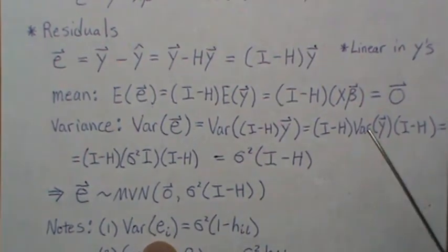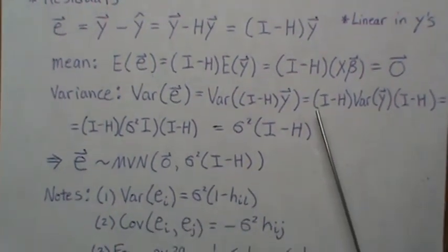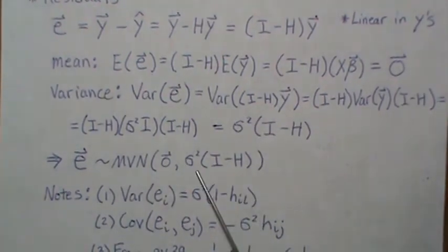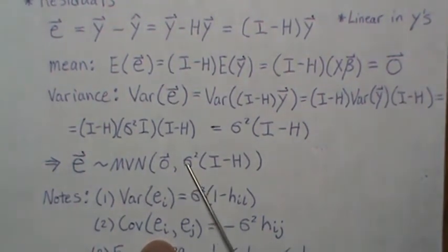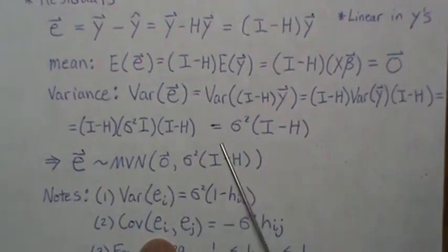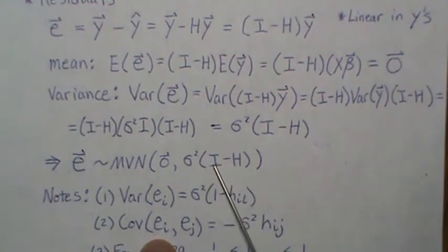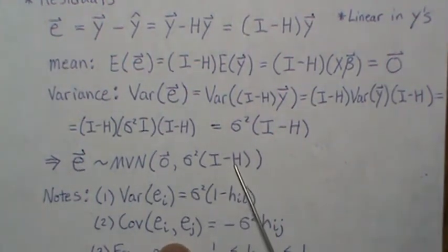Now the covariance: remember this is the variance covariance matrix. So the covariance between i and j is the i-th row and j-th column element. This would be zero at that spot because it's only ones down the diagonal.